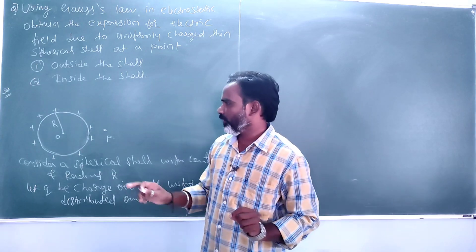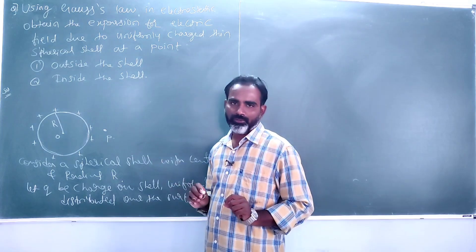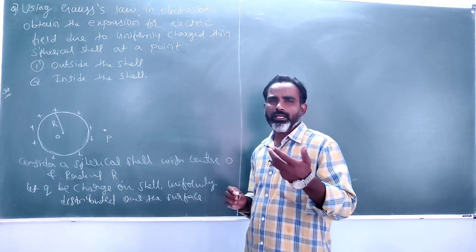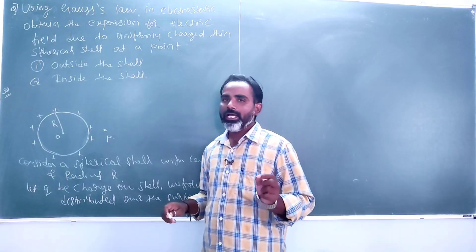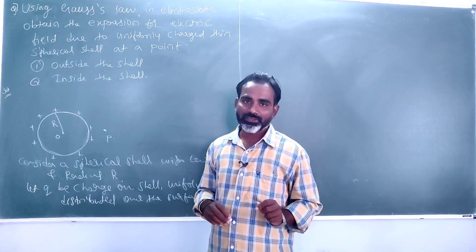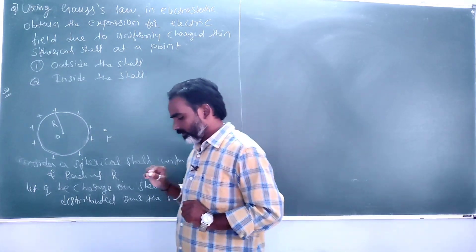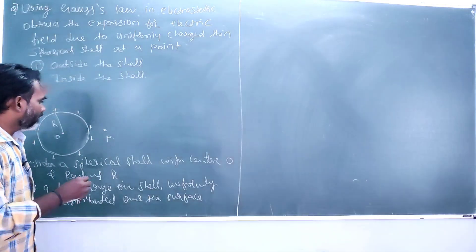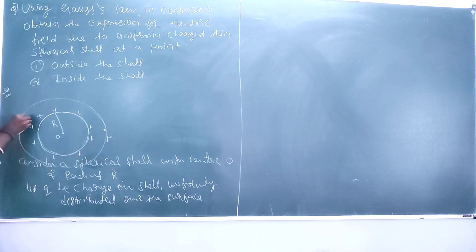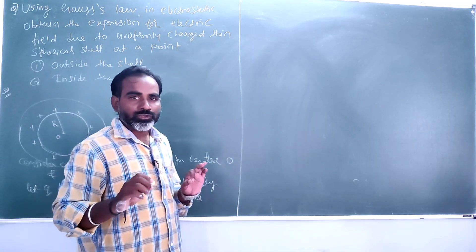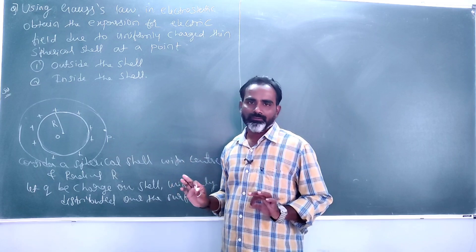Let that point P be outside the shell. I am going to find out the electric field at point P outside the shell. So let's draw a Gaussian surface passing through this point P.